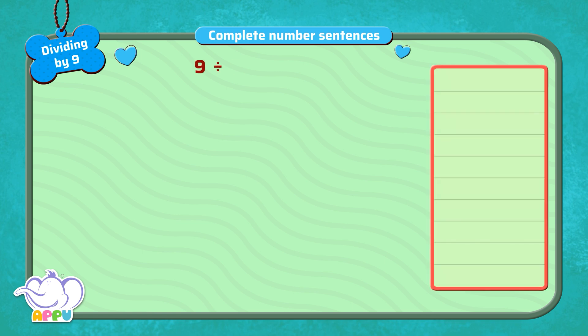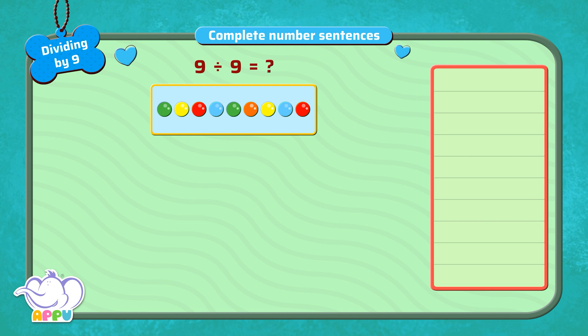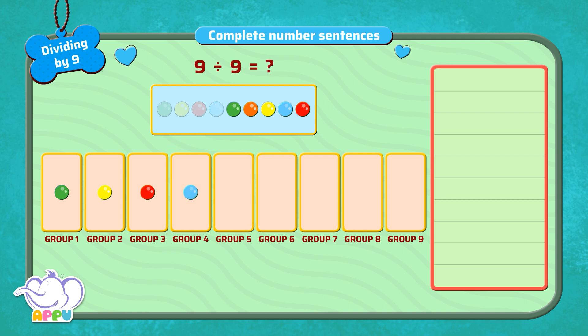What is 9 divided by 9? Since no objects are given, let's take beads. So when we divide 9 beads equally into 9 groups, we get 1 bead in each group. So the answer is 1.